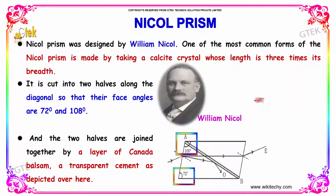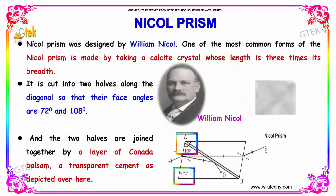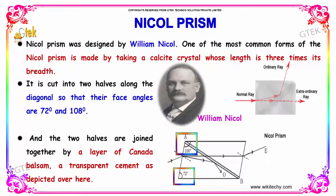The two halves are joined together by a layer of Canada balsam, a transparent cement which is shown here. You are able to see the rays are passed — the ordinary ray is reflected and the extraordinary ray is coming out.